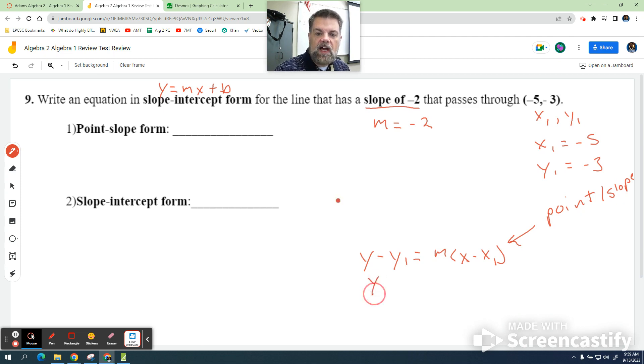Well, then I have y minus y sub 1, which is negative 3, equals the slope, which is negative 2, times the quantity x minus x sub 1, which is actually negative 5. Now, when you minus a minus, it becomes a plus.